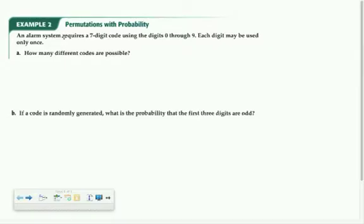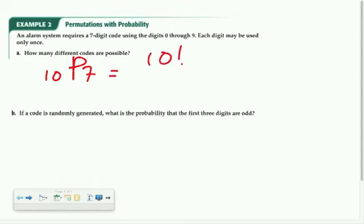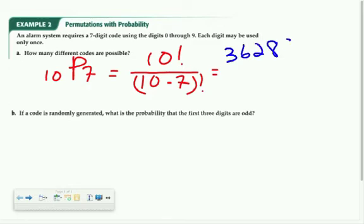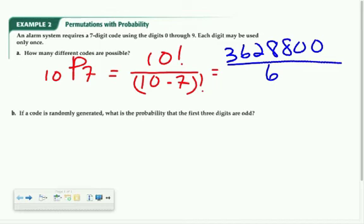In example two, we want to find how many different seven-digit codes we can create using the digits zero through nine. We have ten possible digits to choose from, and since we're arranging them, this is a permutation. The formula gives us 10P7, which is 10 factorial divided by (10 minus 7) factorial. 10 factorial is 3,628,800 divided by 3 factorial, which is 6.